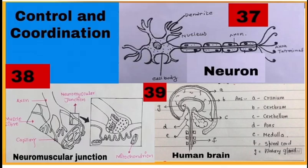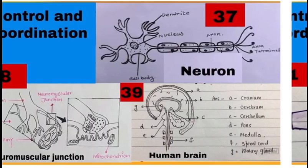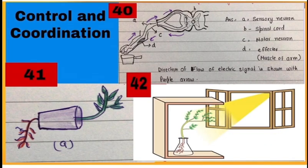38 is neuromuscular junction, while 39 is showing different parts of human brain A to G. 40 is showing reflex arc. 41 is showing geotropism, where shoot is negatively geotropic and root is positively geotropic.